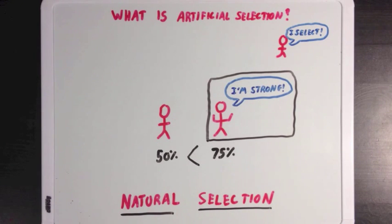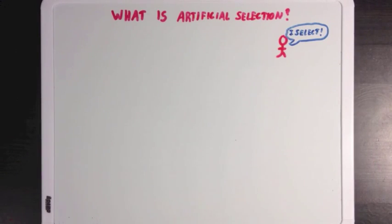But that's exactly the difference between natural and artificial selection. In fact, some people call artificial selection unnatural selection. And let's explain this by jumping right in with an example.